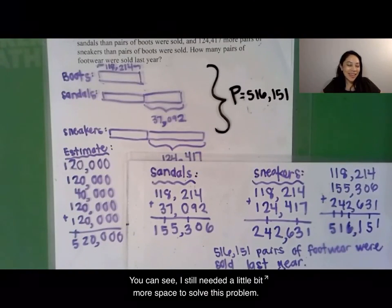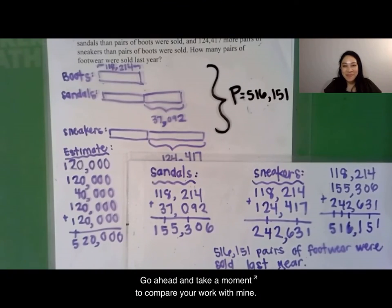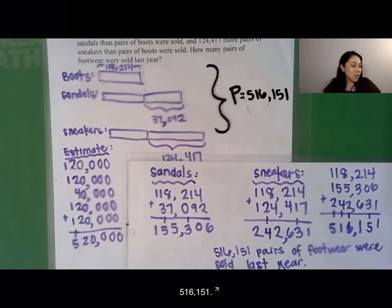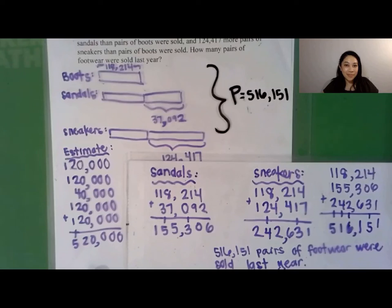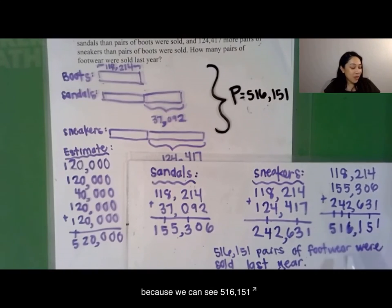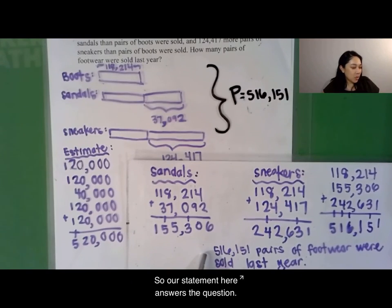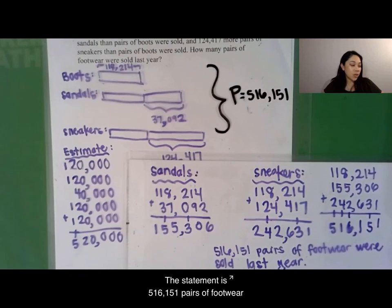You can see I still needed a little bit more space to solve this problem. Take a moment to compare your work with mine. When I solved it, I saw that it was 516,151. Let's return now back to our estimate — is our estimate reasonable? Yes, it is. Because 516,151 rounded to the nearest 10,000 would in fact be 520,000. So our statement here answers the question: 516,151 pairs of footwear were sold last year.